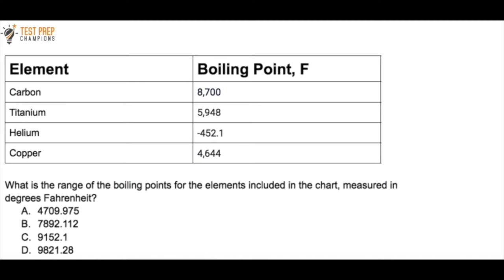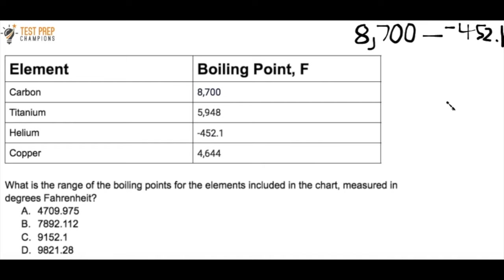This question shows a table with different elements and their boiling points. The question asks: what is the range of the boiling points for the elements in the chart, measured in degrees Fahrenheit? To find the range, take the biggest number in the data set and subtract the smallest. The biggest number is 8,700 and the smallest is negative 452.1. Subtracting gives the answer C. That's all you do to find the range.